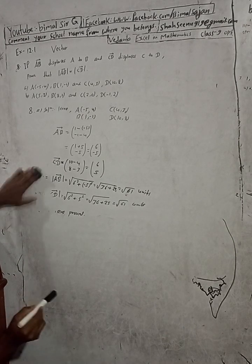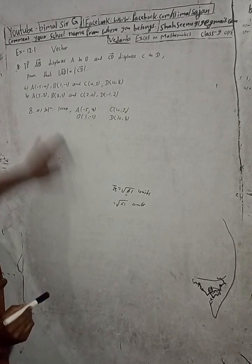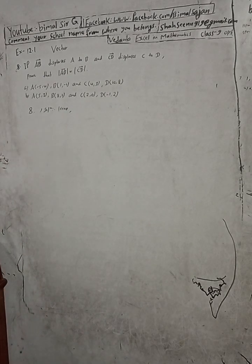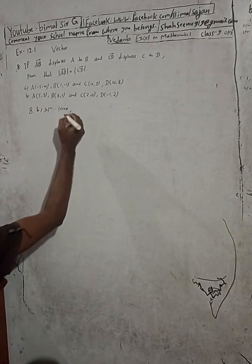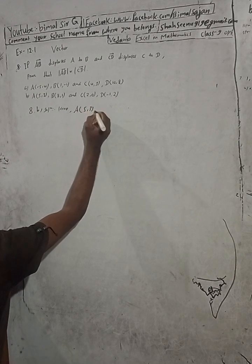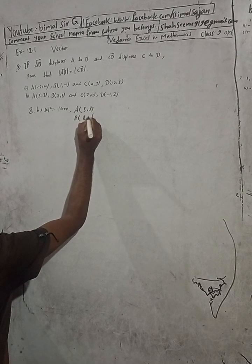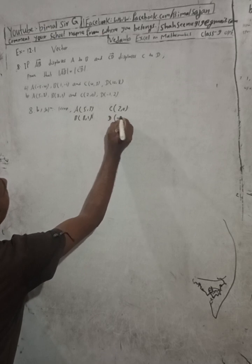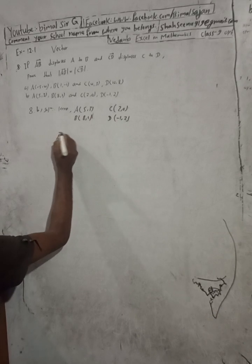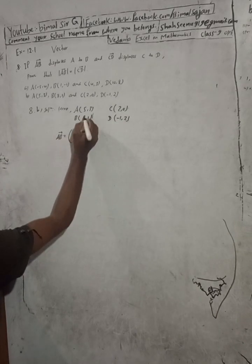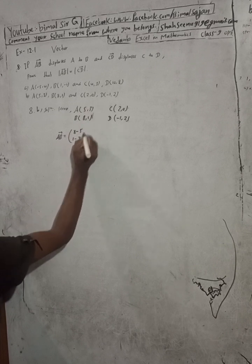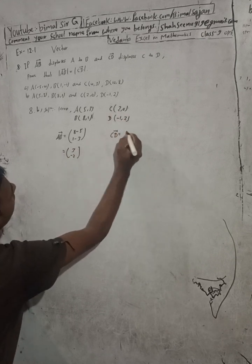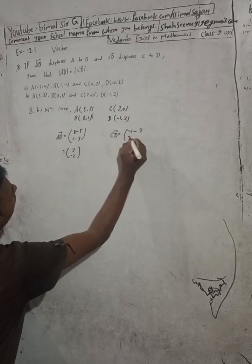Now part B. Here A = (5, 3), B = (8, 1), C = (2, 0), and D = (-1, 2). From here, AB vector is equal to (8 - 5, 1 - 3) which equals (3, -2). And CD vector is equal to (-1 - 2, 2 - 0), so this is equal to (-3, 2).